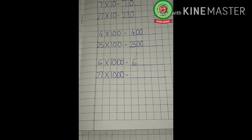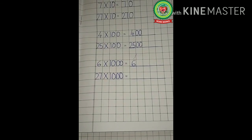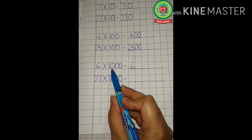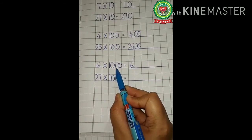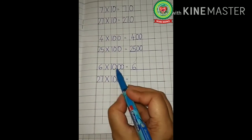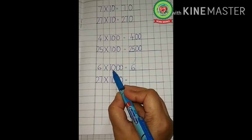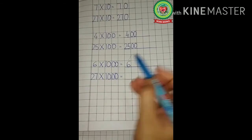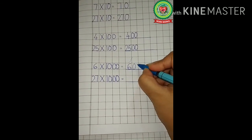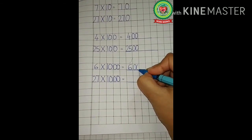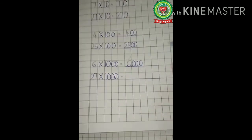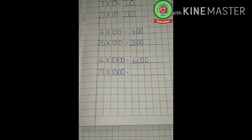Now how many zeros do you have? 1, 2, 3 — we have 3 zeros. So we will write 3 zeros after the digit: 1, 2, 3. So the answer is 6000.